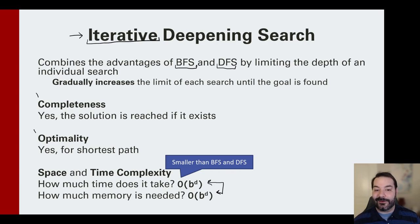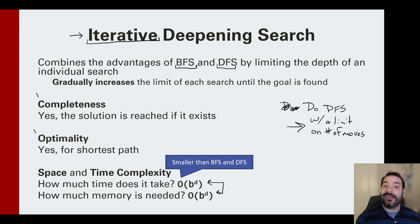So what is iterative deepening search? The entire idea is we are going to do depth-first search with a limit on number of moves. That's it in a nutshell. We are simply going to say just do DFS, but you're only allowed to make, say, one step or three steps, and that's it. And if you can't find the solution in that many times, we'll get there.